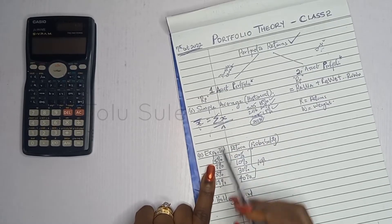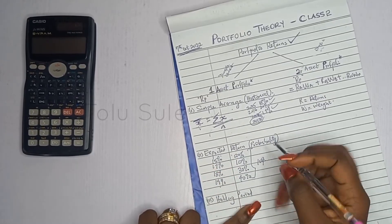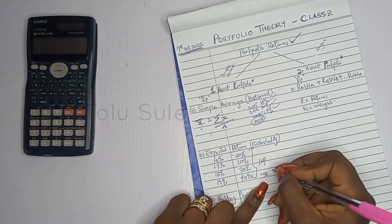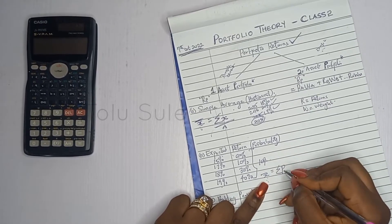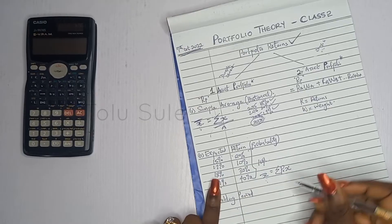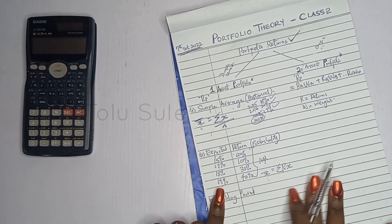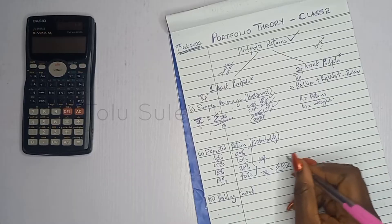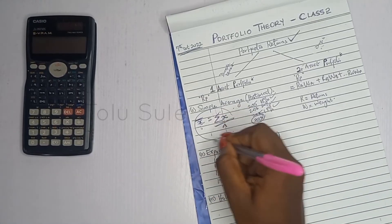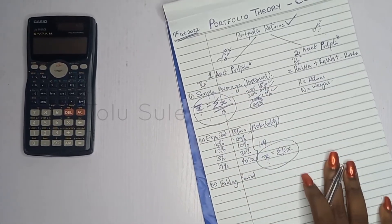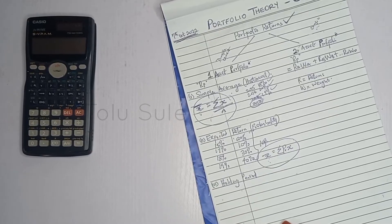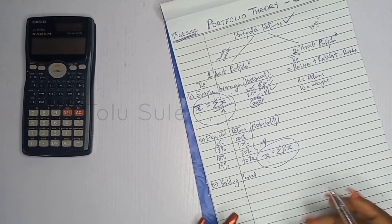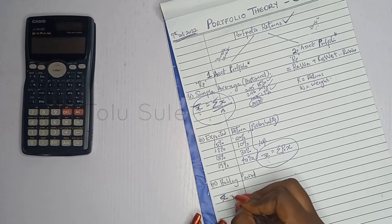The formula for this approach is x-bar equals the summation of the probable return — that is, probability times return. We'll solve exam questions to demonstrate all of this. The holding period approach uses the previous price of the share and the dividend.